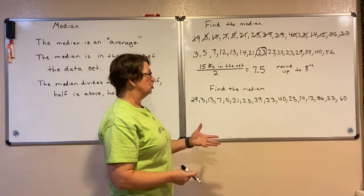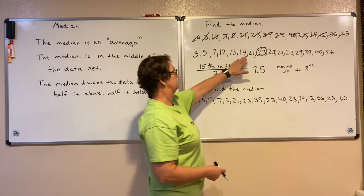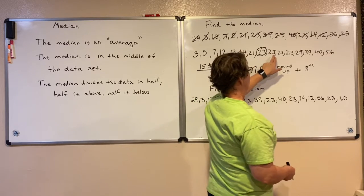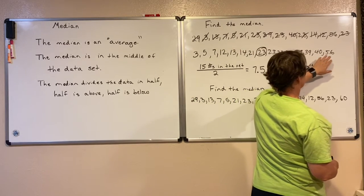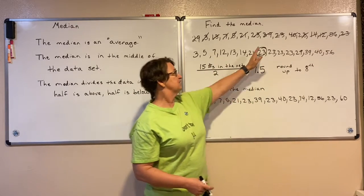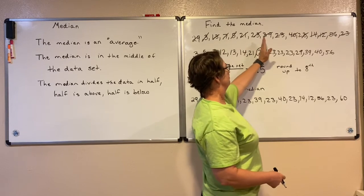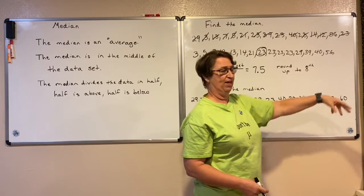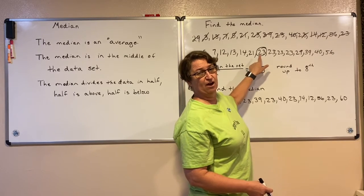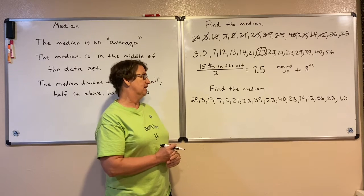Now I'm going to check it to make sure there are the same number on both sides. There are 7 below that number and 7 above that number. So I've literally cut this data set in half so that half is below this number and half is above that number. 23 is my median of this data set. Notice that it is directly in the middle of that data set.